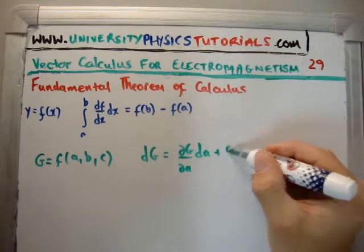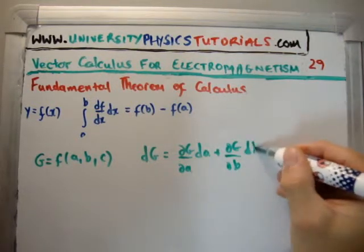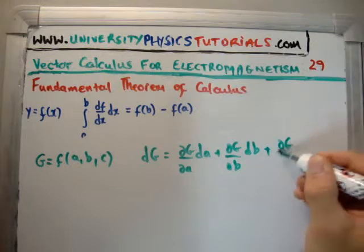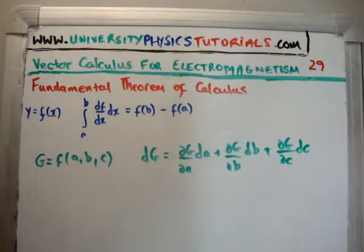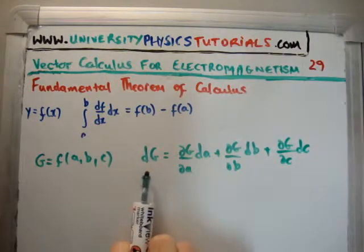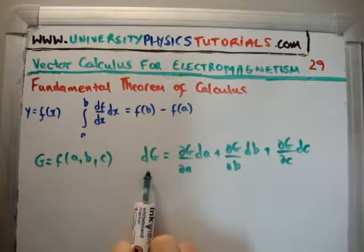plus del G, del B, dB, plus del G, del C, dC. Okay, and that is the total derivative, or the total infinitesimal change in capital G.